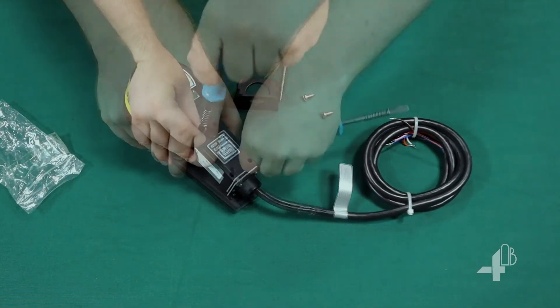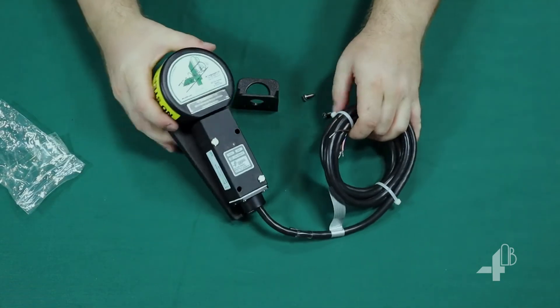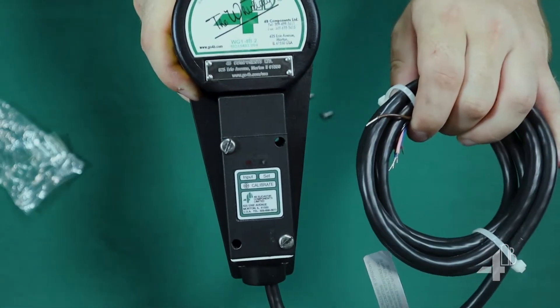Using the provided screws, mount the M800 onto the Whirligig, placing the sensor detection face close to the target guard. You'll want about the width of a credit card in between.